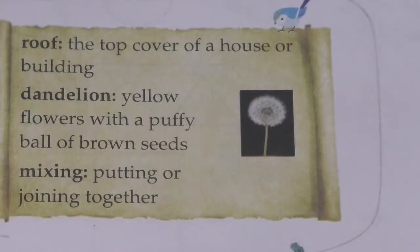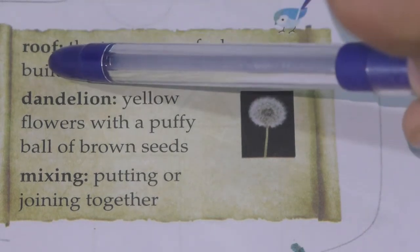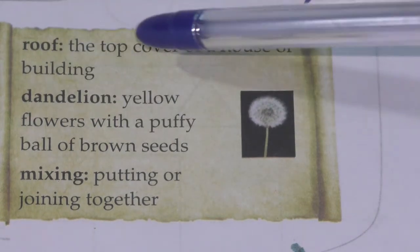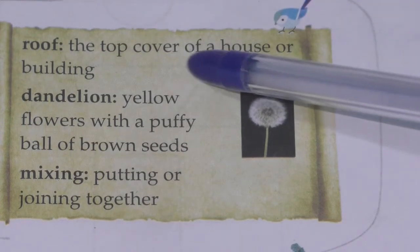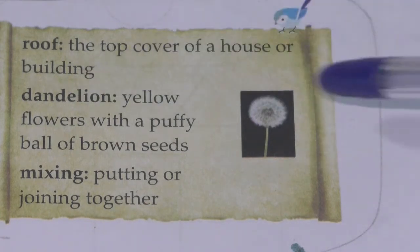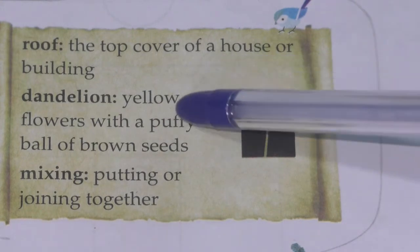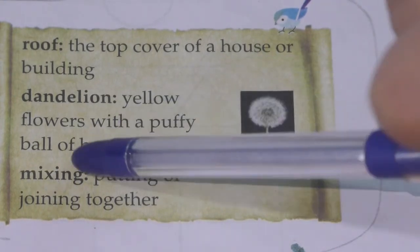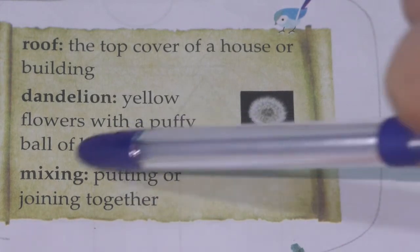Now children, let's see the keywords of this poem, 'Blue and Yellow Mixing.' First, 'roof' — the top cover of a house or building. Second, 'dandelion' — yellow flowers with a puffy ball of brown seeds.